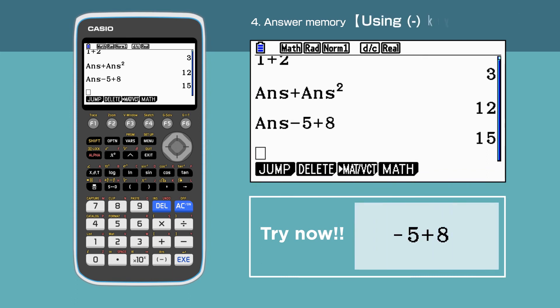Bear in mind, when we start our calculation with a negative number without using Answer Memory function, we need to use the bracket minus key, not the subtract key. The Answer Memory function will not auto-fill when using the bracket minus key.